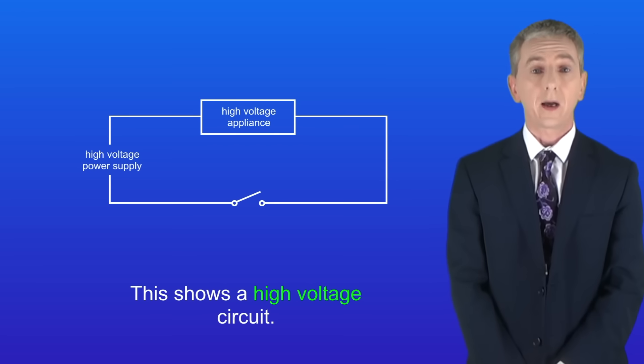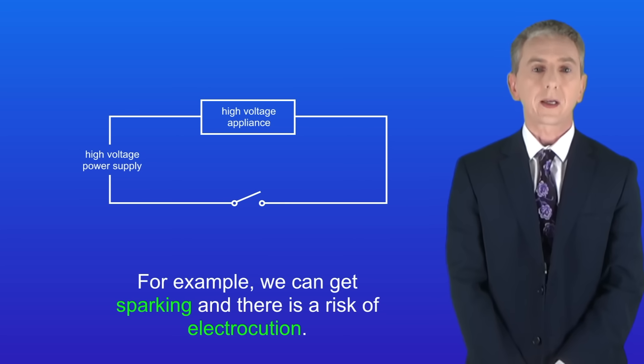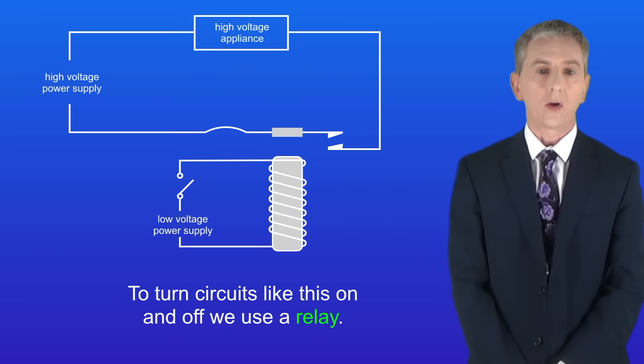I'm showing you here a high voltage circuit. With circuits like this, using a switch to turn them on and off can be dangerous. For example, we can get sparking and there's a risk of electrocution. So to turn circuits like this on and off, we use a relay.